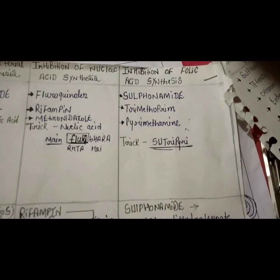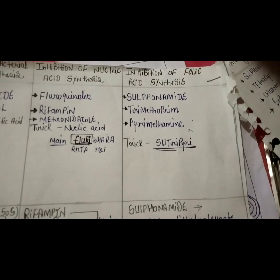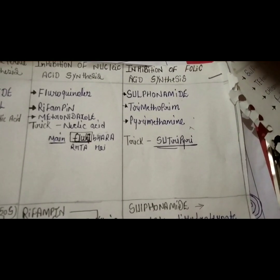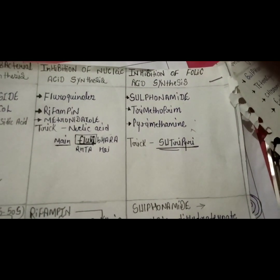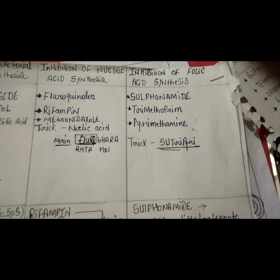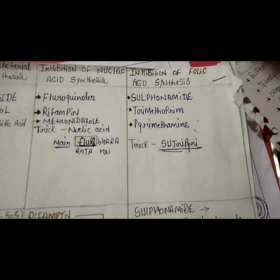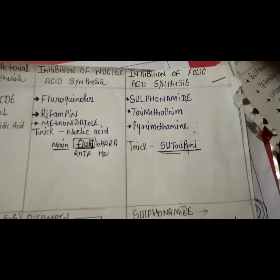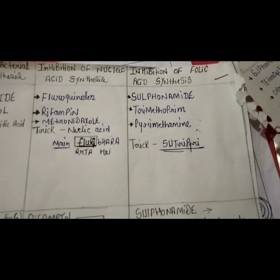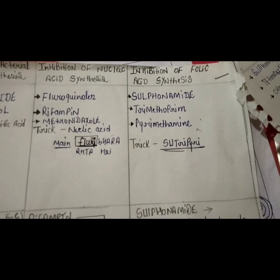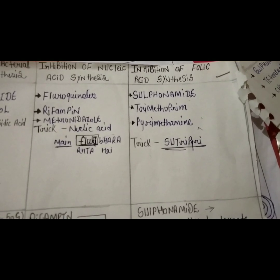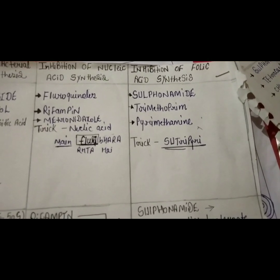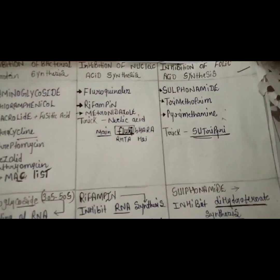Inhibition of folic acid synthesis — the trick is written down below so you can remember it directly; otherwise it is a very easy trick. The drugs involved are sulphonamide, trimethoprim, and pyrimethamine.